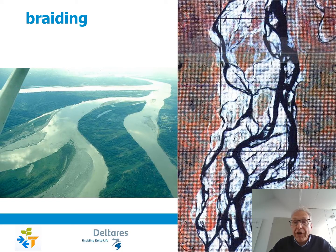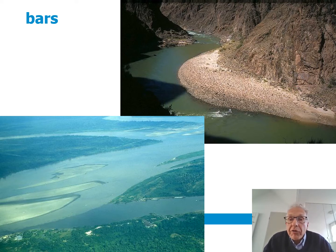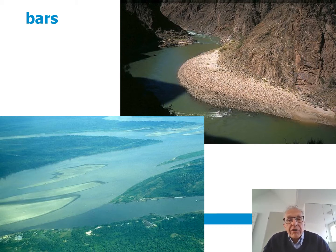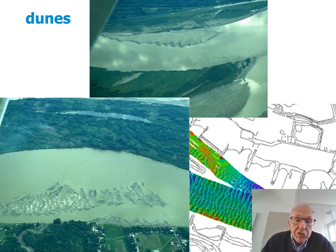We can also have braided rivers in which channels flow around islands and bars. Zooming in further, we see bars — bars that may be at the inner bend, like in the Colorado River in the United States, or they may be in the center, like islands, as seen in the Amazon River in Peru. Smaller features are dunes, superimposed on top of the bars; dunes are even smaller than the bars.